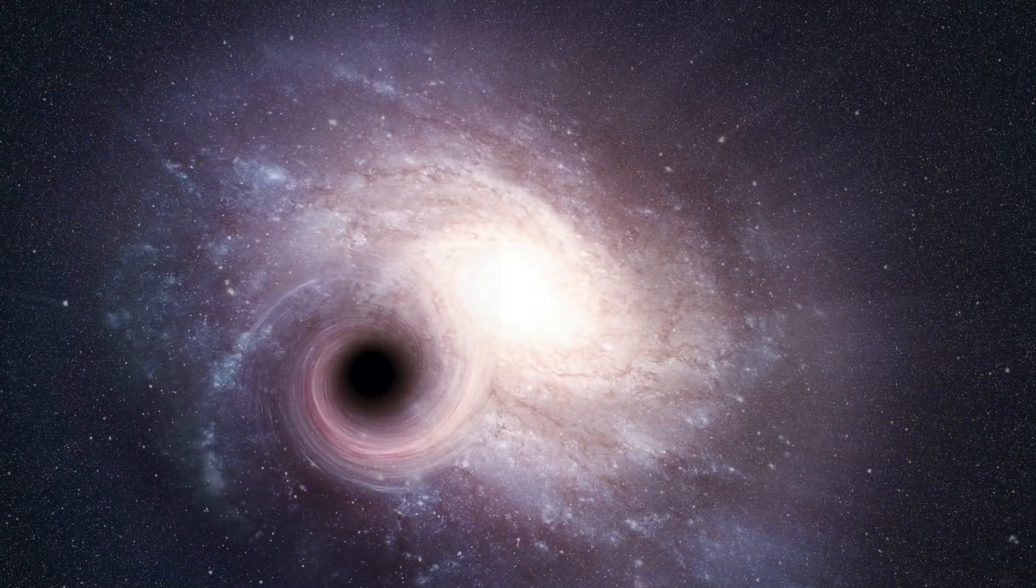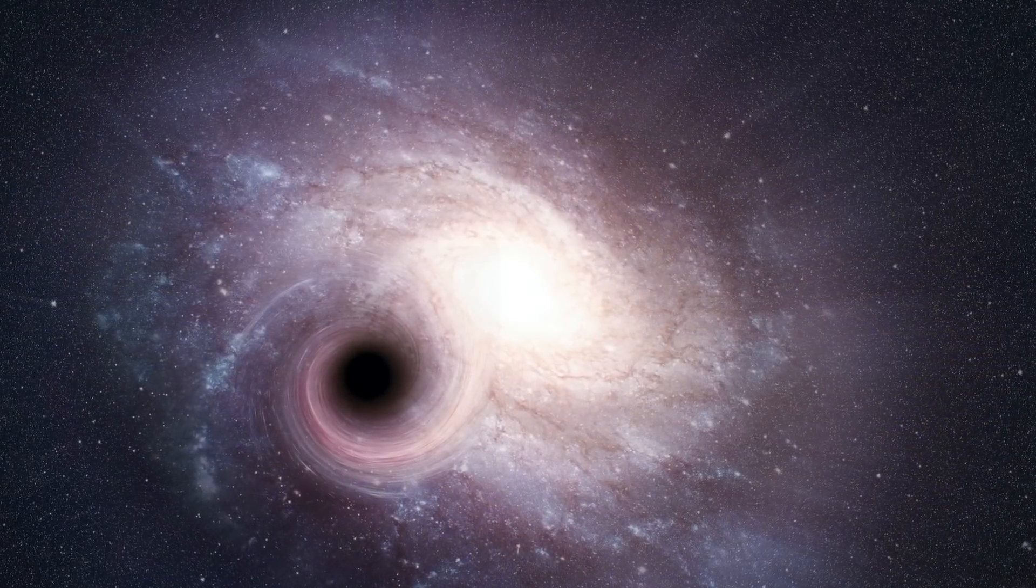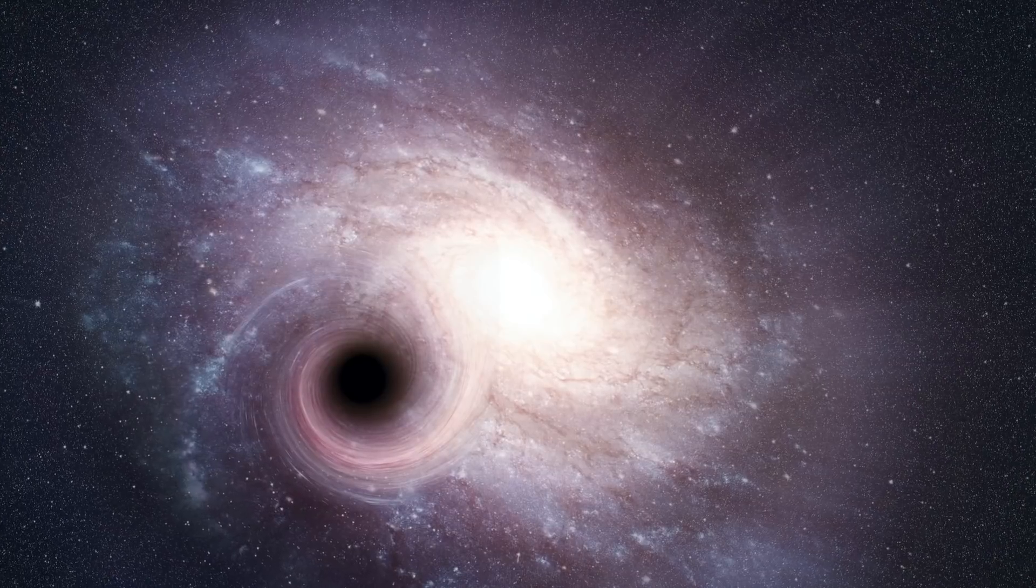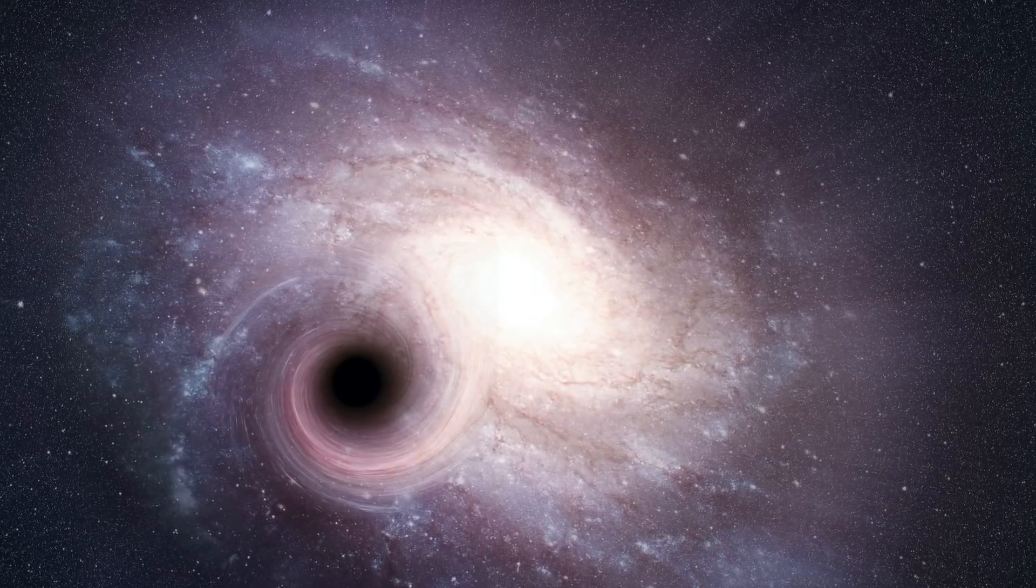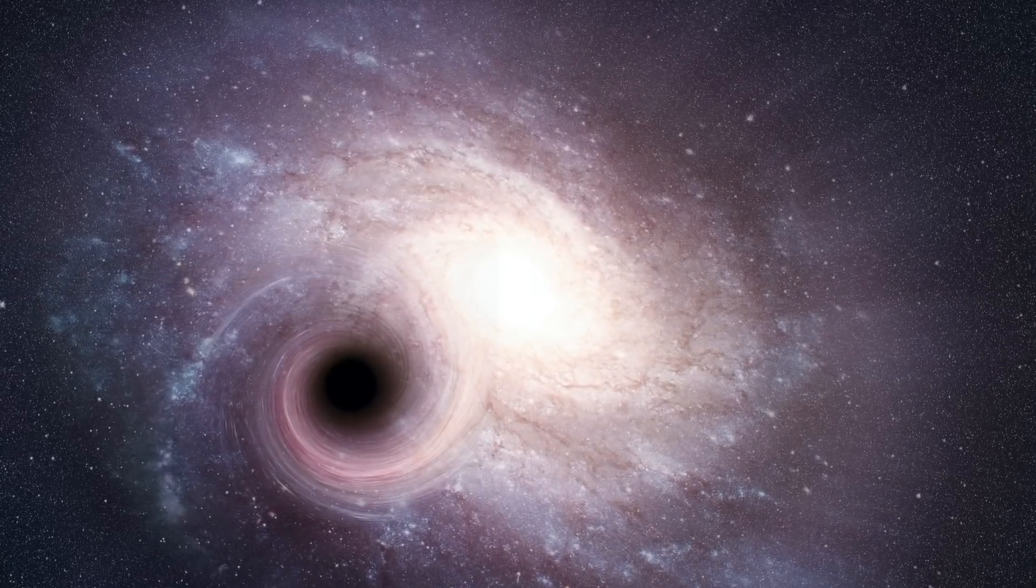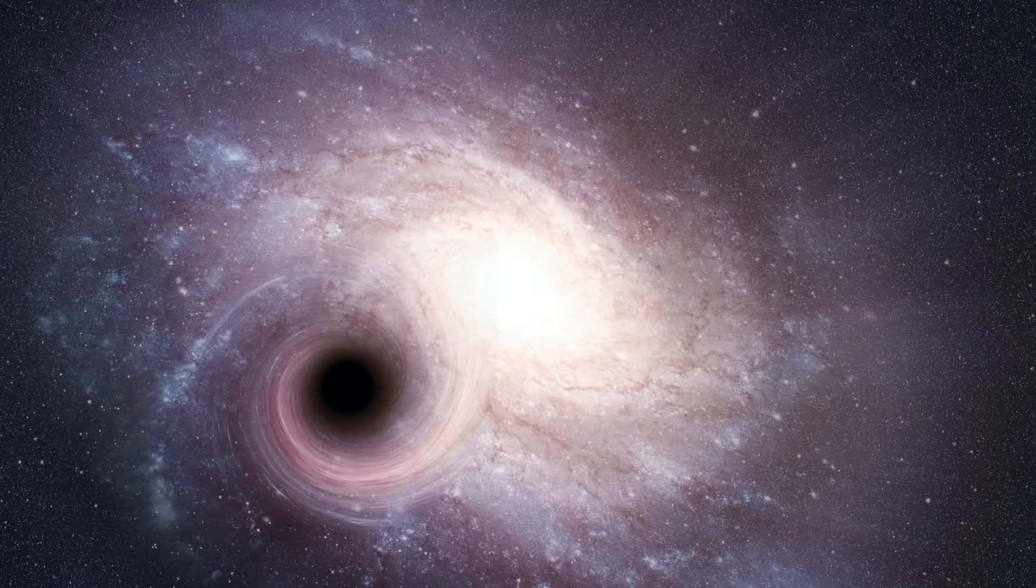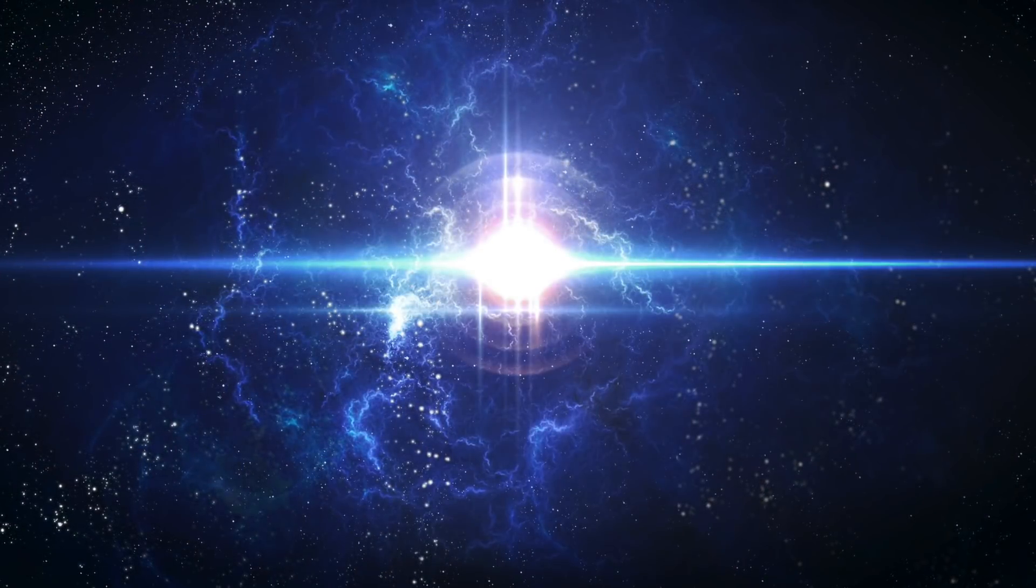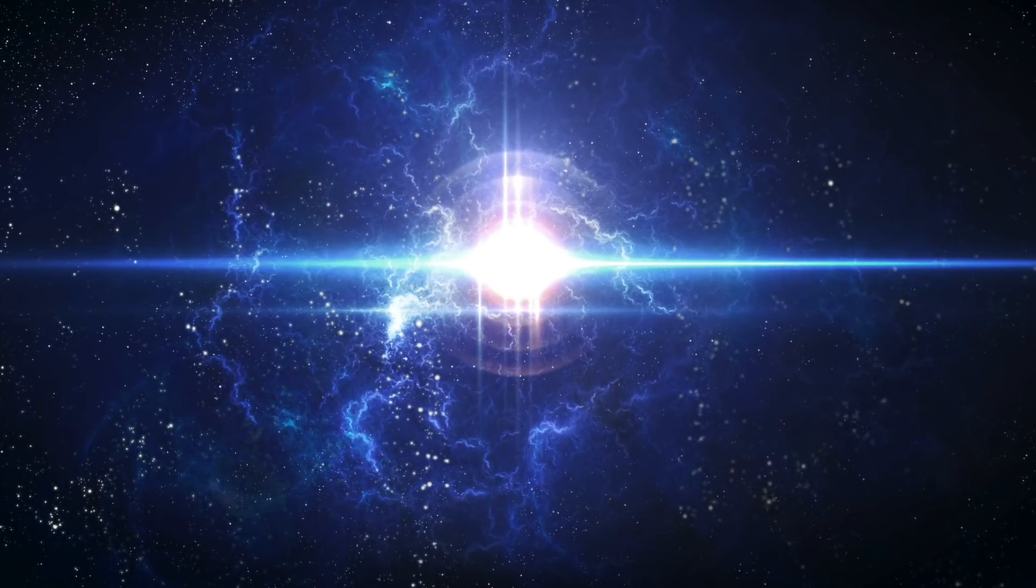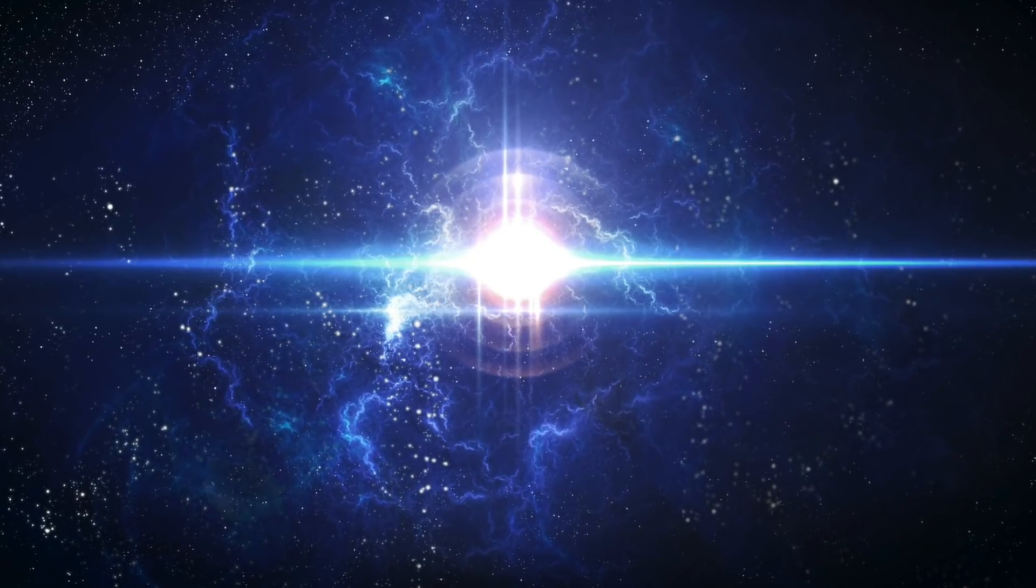However, luckily for us, J2157 is roughly 12.5 billion light years away. This means that we are observing it when the universe was 10% of the age it is now. Scarily, this also means the black hole is likely much, much larger today, and its size could be unimaginable.